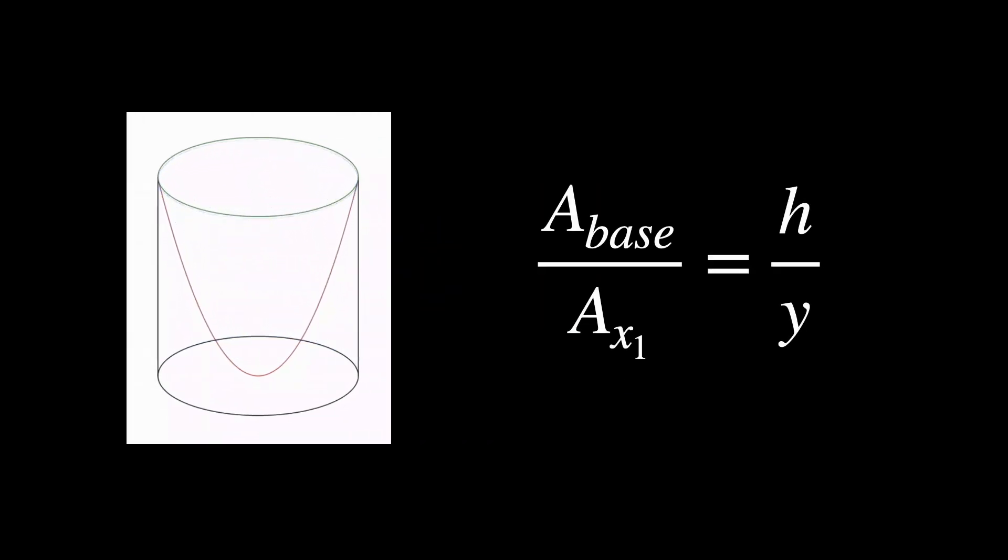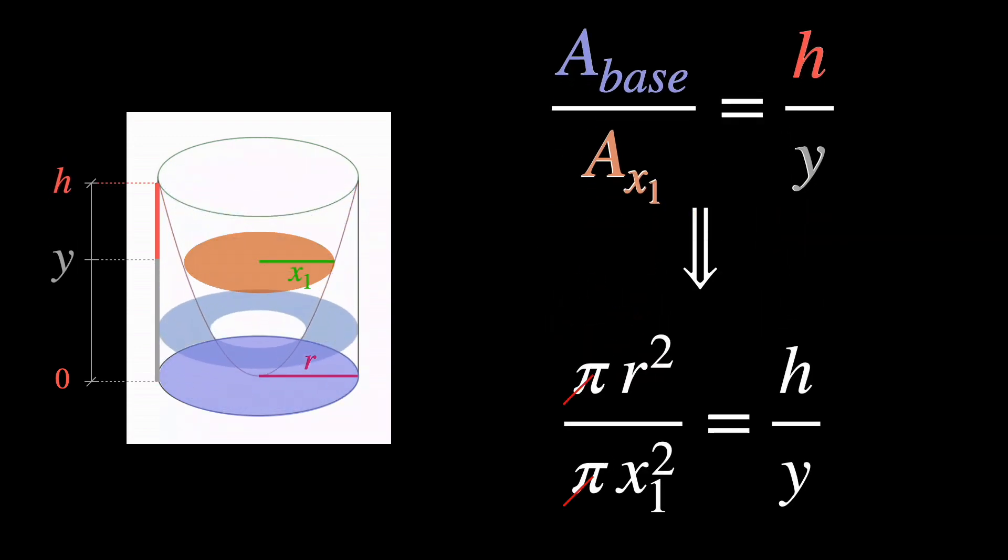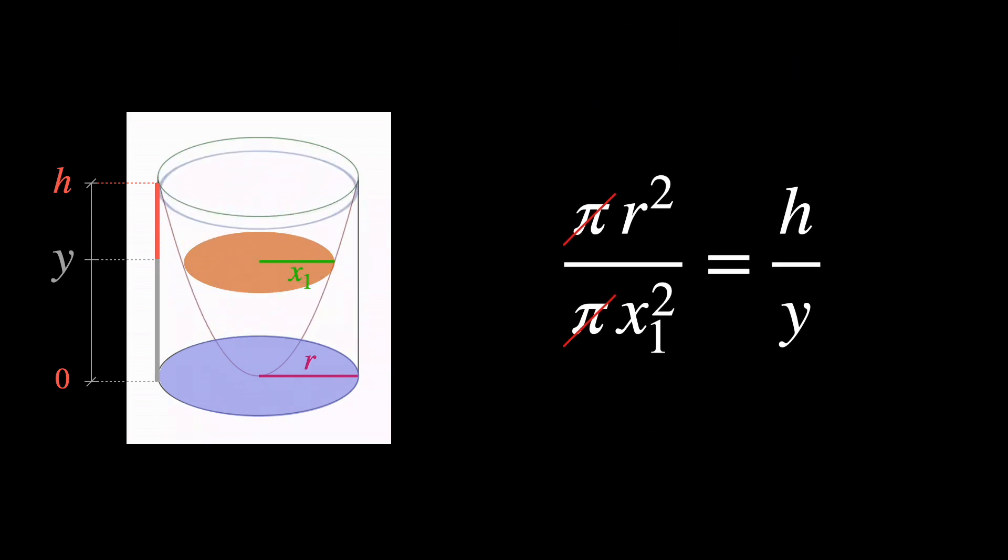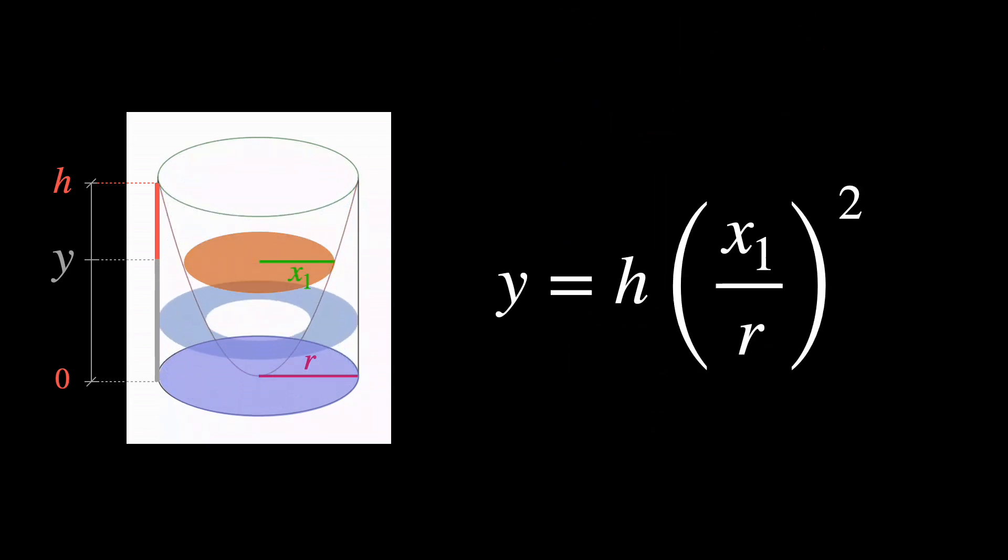For the first carved out paraboloid, the height Y and the corresponding length X1 on the base are related through this formula. Y equals H times X1 over R squared.